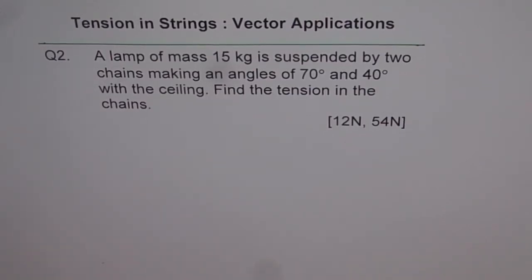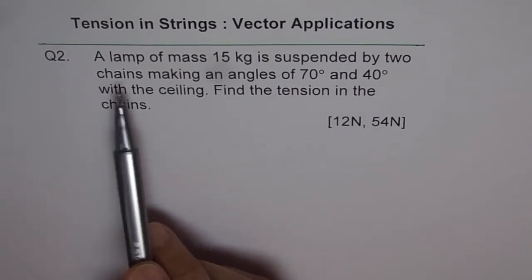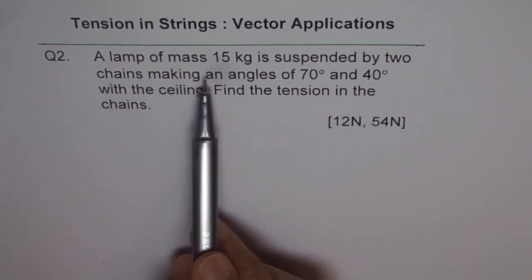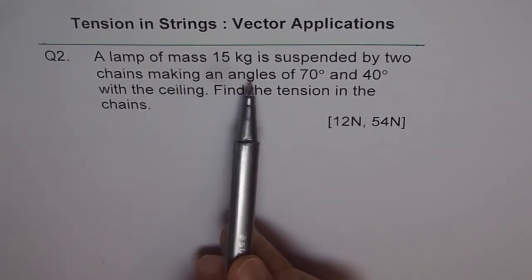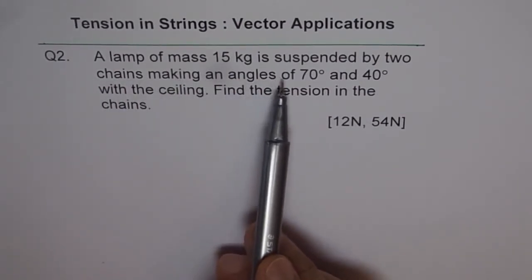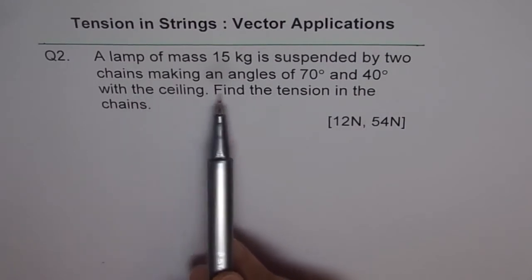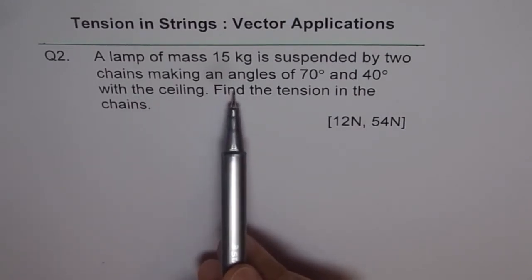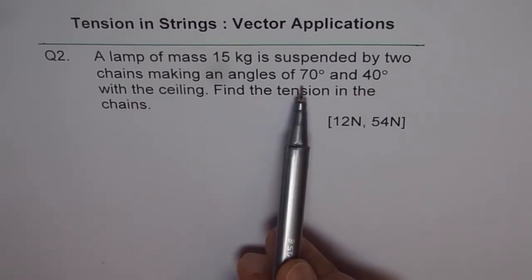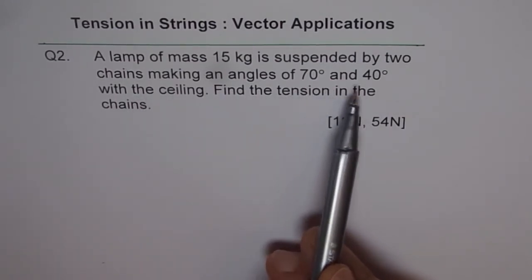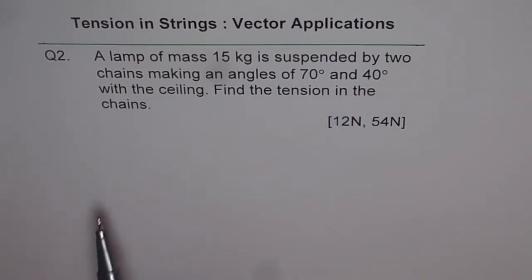Tension in strings, vector application. Question number two. A lamp of mass 15 kg is suspended by two chains making an angle of 70 degrees and 40 degrees with the ceiling.